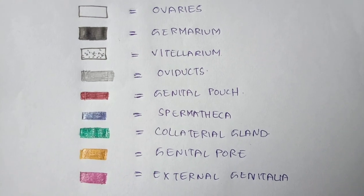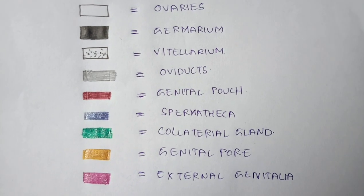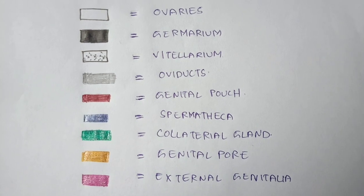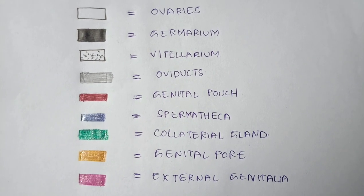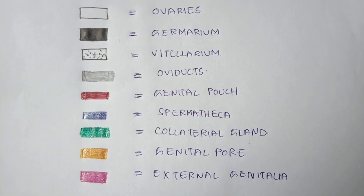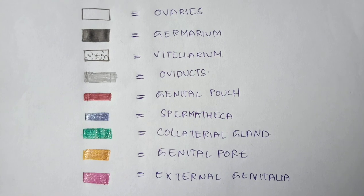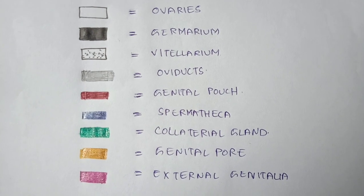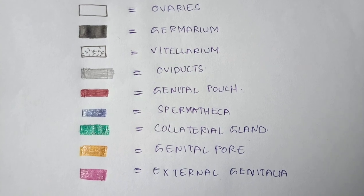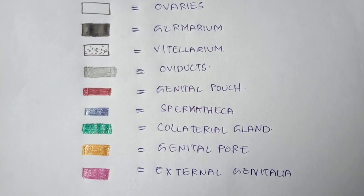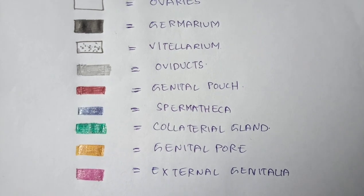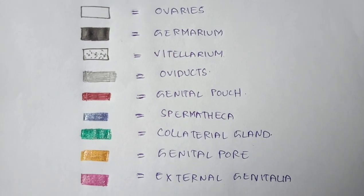Let us discuss each part present in the diagram. The black border line indicates ovaries, black color dots indicate germarium, pencil-shaded region indicates oviduct, red color indicates genital pouch, dark blue indicates spermathecae, green indicates collateral gland, yellow indicates genital pore, and pink indicates external genitalia.